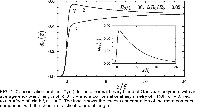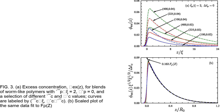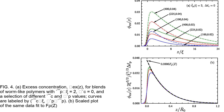The results show the excess concentration of the more compact component at the surface, which reaches 8% even though the relative difference in statistical segment lengths is only 2%. The results show that the excesses are reduced by about 40% compared to the Gaussian polymers (A), and a reduction of about 70% in the excesses compared to the Gaussian polymers (B). This demonstrates the collapse of the profiles when scaled with respect to the relative difference in flexibility and the average end-to-end length.